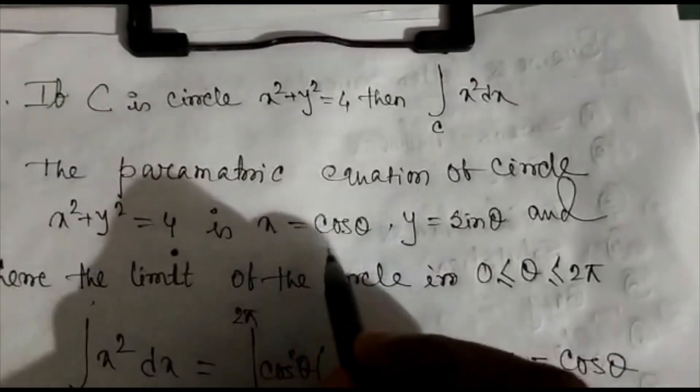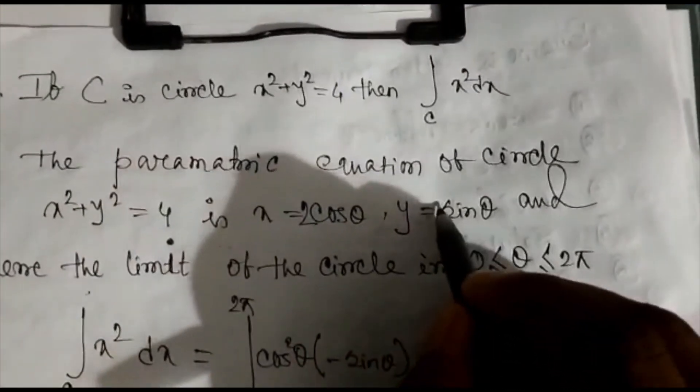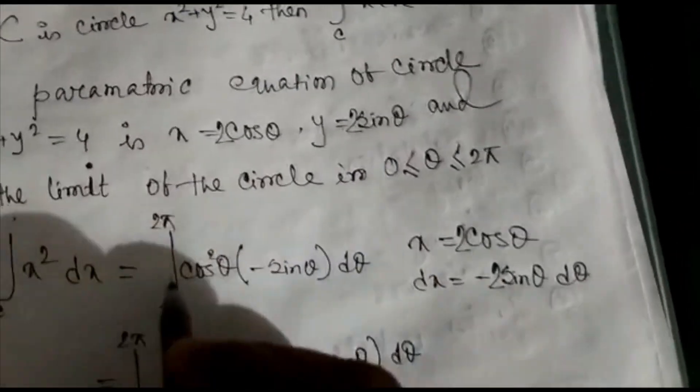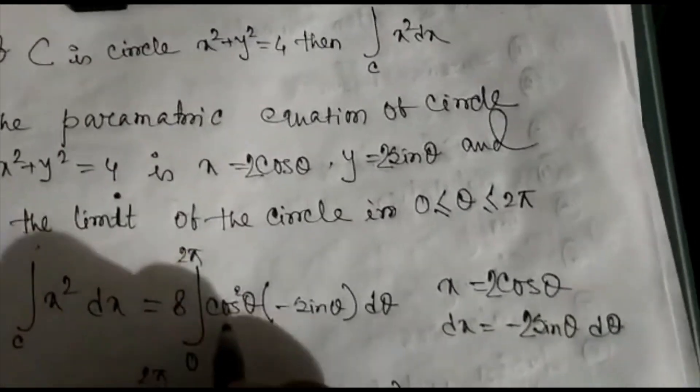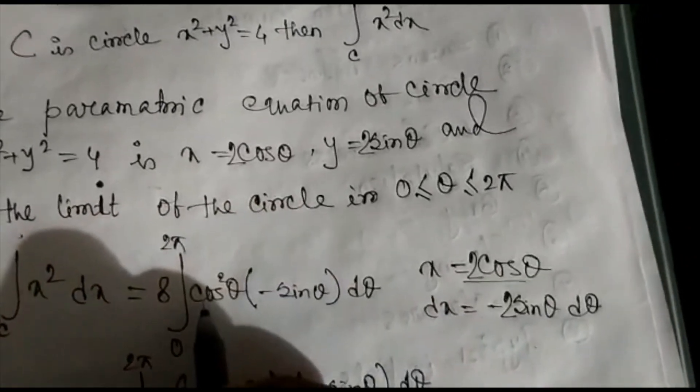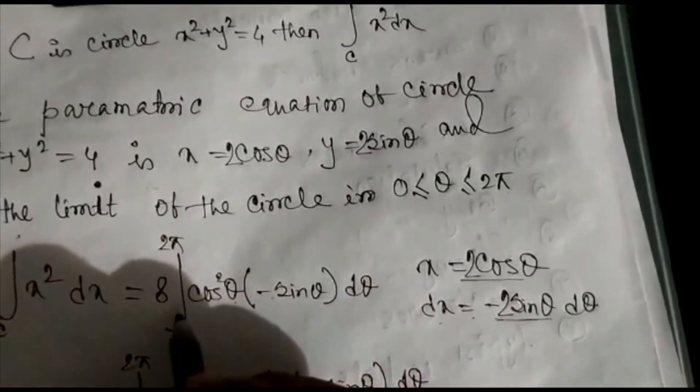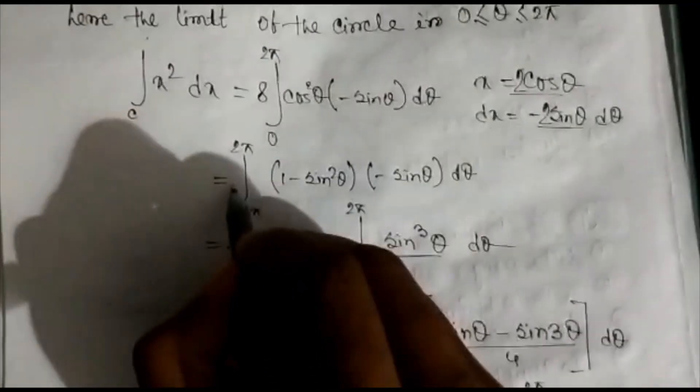Sorry — the factor of 2 was missing. The correct parametric equations are x = 2cos θ and y = 2sin θ. So x² = (2cos θ)² = 4cos²θ, and dx = −2sin θ dθ. This means the integrand becomes 4cos²θ × (−2sin θ dθ) = 8cos²θ(−sin θ dθ), so a factor of 8 appears.